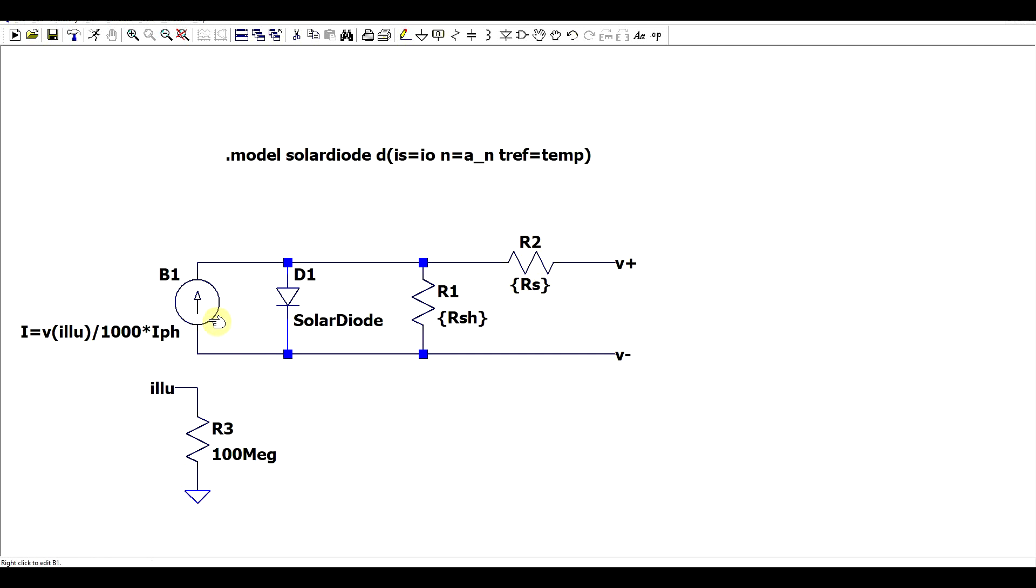For example these parameters attributed to the values of the resistors RS and R shunt are written in brackets for our behavioral current source. This is the photo current and the total value of this current source is dependent not just on this photo current but also the illumination. A thousand volts will be equivalent to a thousand watts per square meter. If you have a different value then you will get a smaller current.